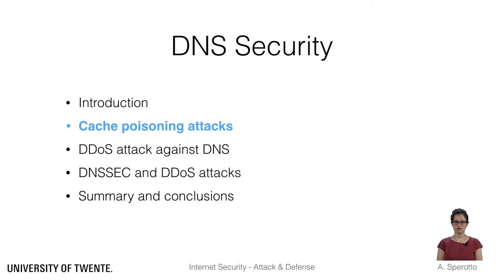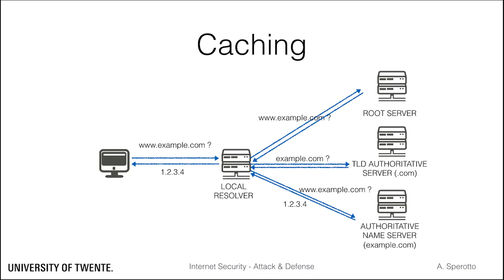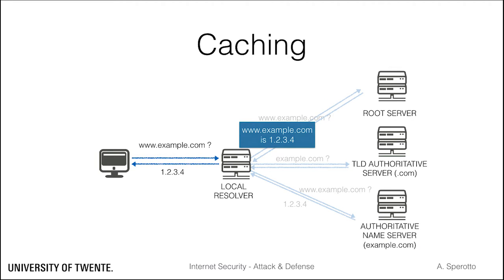In this set of slides, we will look into cache poisoning attacks. In the introduction, we have seen the typical name resolution process. In practice, for efficiency reasons and to keep the number of DNS messages on the internet lower, only part of this process might take place. Resolvers have a local cache of recently retrieved records that is used to answer frequent queries.